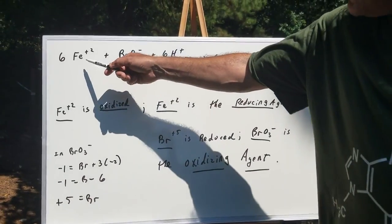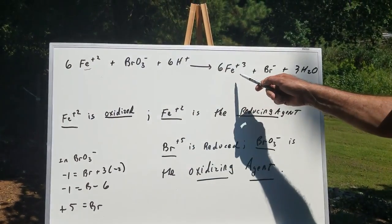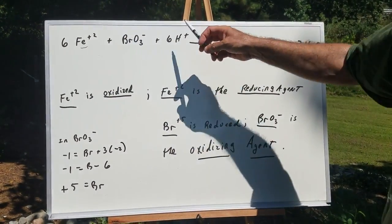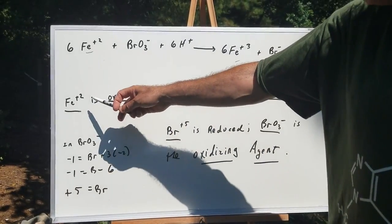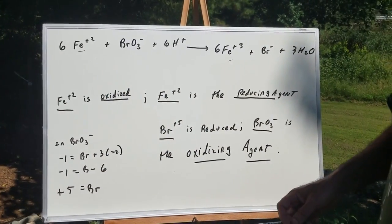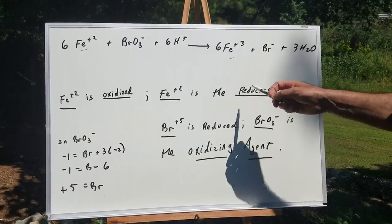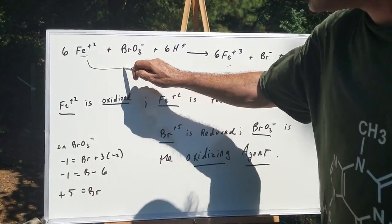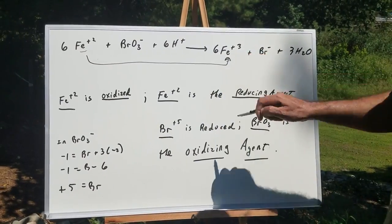As you can see, Fe+2 is going to Fe+3, so the oxidation number is increasing. Therefore, Fe+2 is oxidized, and Fe+2 is therefore the reducing agent. So that's easy enough. That's money in the bank. You got one really easy one.